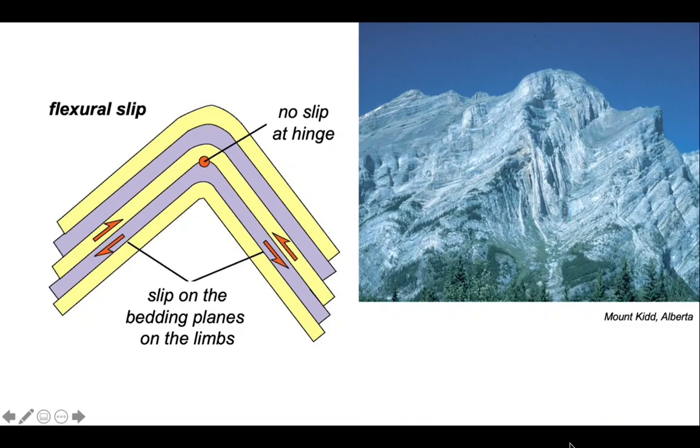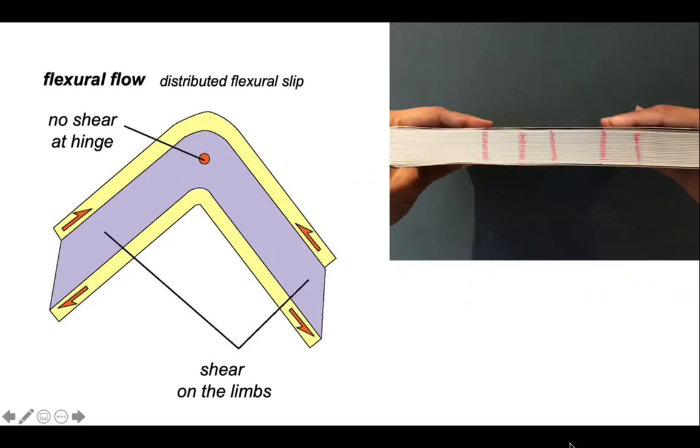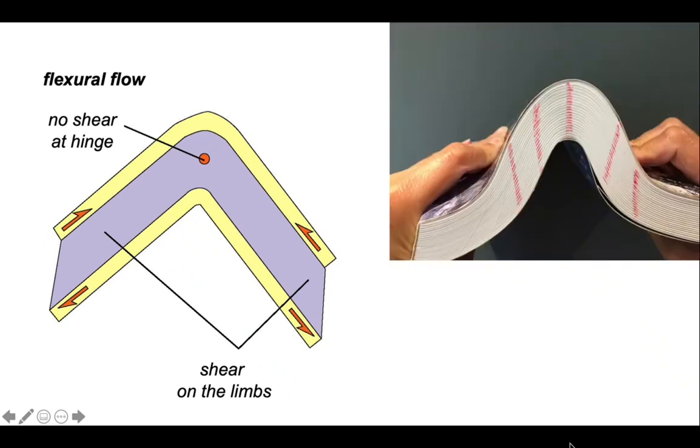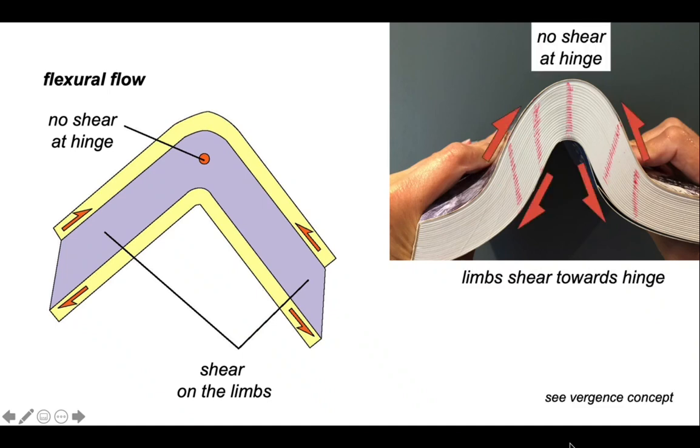So there's a derivative of flexural slip, which is called flexural flow. So rather than view the rock as made of lots of individual bedding planes, it's viewed as a continuous medium. Nevertheless, we can still mimic this behavior and the shear sense using our paperback book. So on here, we've drawn some lines that are more or less orthogonal to layering. And after folding, this is what happens. So you can see that there's no shear at the hinge and the limbs themselves have sheared inwards like this.